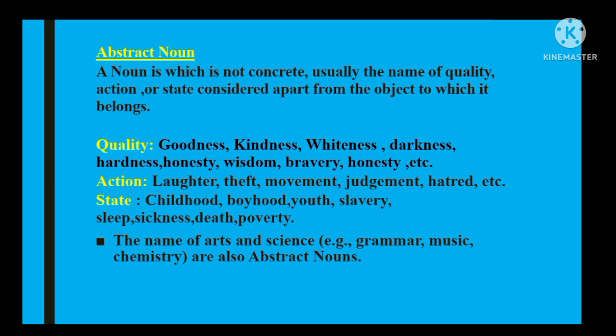Abstract noun aisa naam hota hai jo concrete nahi hota — abstract aur material noun ek doosre ke opposite hain. Concrete se murad yeh hai ke uski koi physical shape nahi hoti, koi wazan nahi hota, woh jagah nahi gherti. Aap matter ki definition ke opposite sochen: matter koi bhi cheez jiska wazan ho, jis ki koi shape ho, jo jagah ghair sake — lekin abstract uske ulat hota hai. Yeh kisi bhi cheez ki quality, action, ya state ho sakti hai.